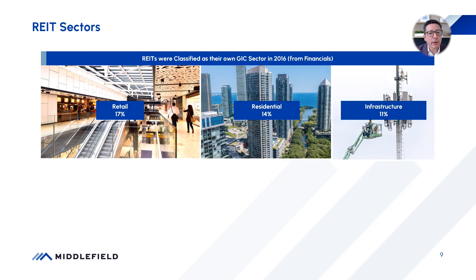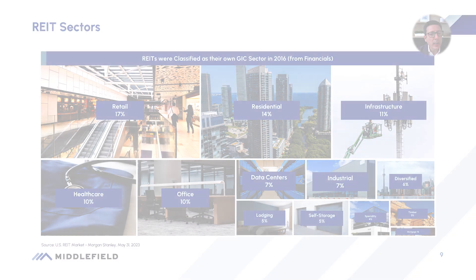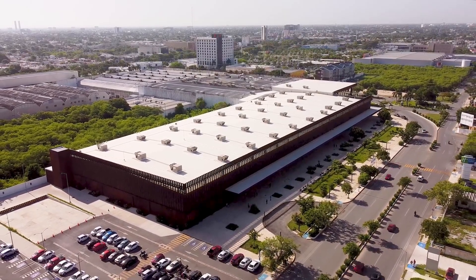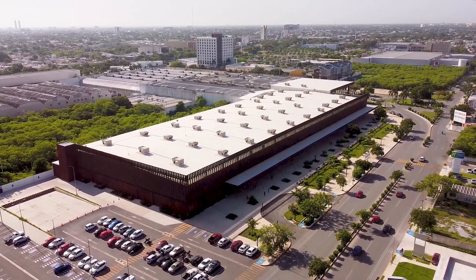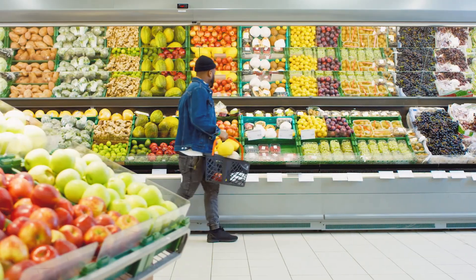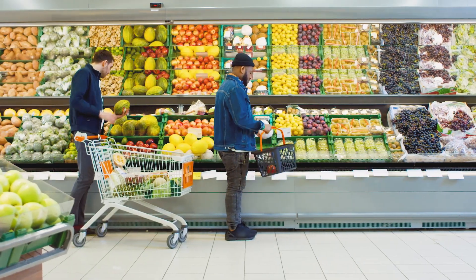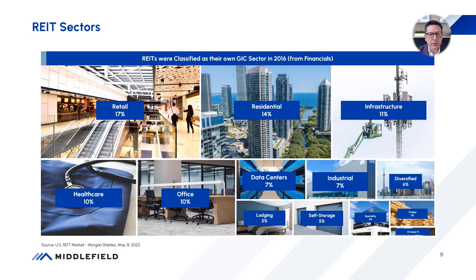There are various types of REITs classified differently, and they also behave differently because of their underlying business. Retail REITs cover brick and mortar retail and can be in the form of shopping malls. The area preferred here at Middlefield is open-air, grocery-anchored, necessity-based retail — not shopping malls, but still providing retail services.